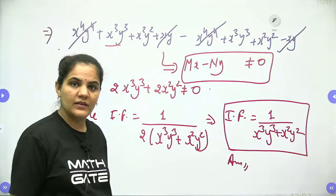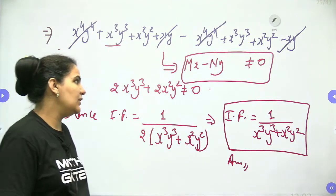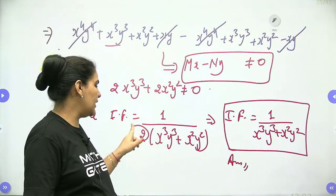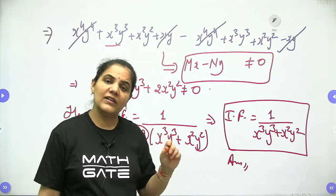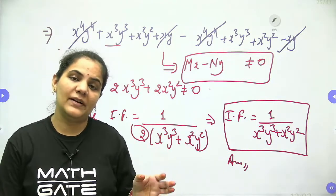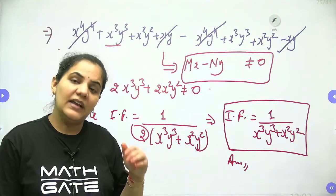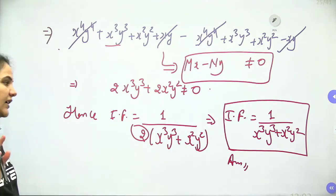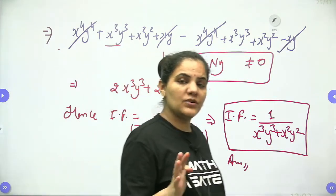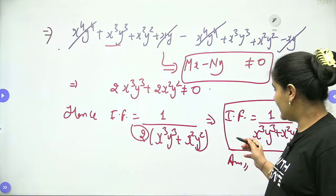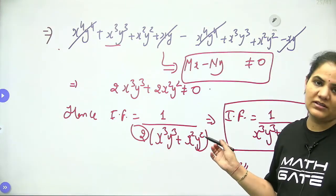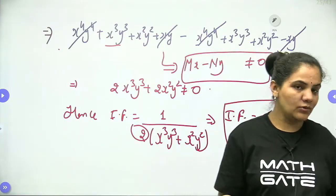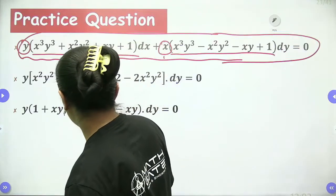The integrating factor is not affected by constant terms, so we drop the 2. The final integrating factor is 1/(x³y³ + x²y²). If the constant is not written in the answer options, there is no need to worry — this is still your answer. Now let's move to the second example of the same method.